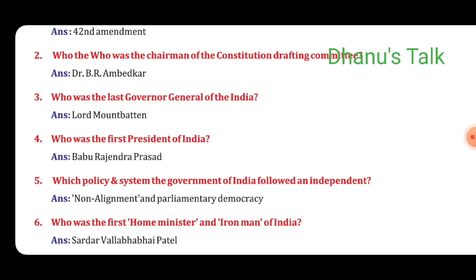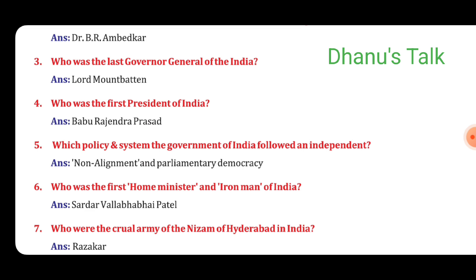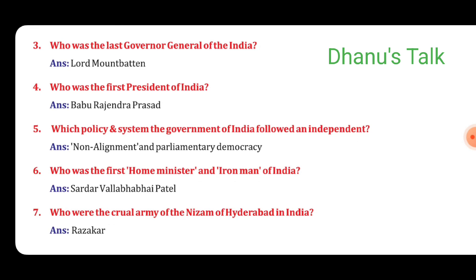Question No. 5: Which policy and system did the Government of India follow after independence? Answer: Non-alignment and parliamentary democracy. Question No. 6: Who was the first Home Minister and Iron Man of India? Answer: Sardar Vallabhbhai Patel. Seventh: Who were the real army of the Nizam of Hyderabad in India? Answer: Razakars.